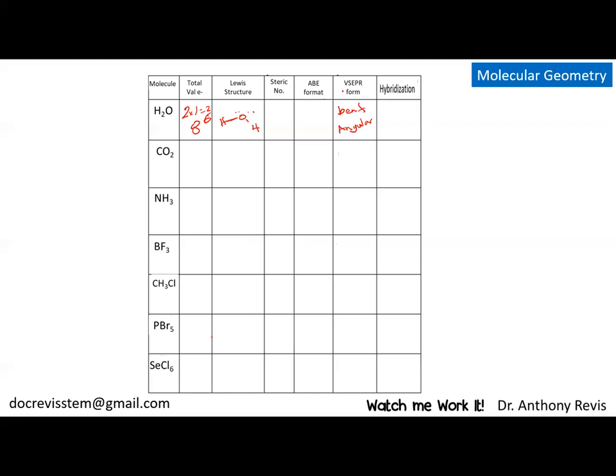And then we have what's called the ABE domain format name here. And we name this by saying the central atom is basically A. And then we look to see what we have around it based on the Lewis structure, and we have two atoms around it, so that's going to be your B, two around it. And we have two sets of lone pairs, so E is going to be electrons, your lone pairs. You have two sets of lone pair electrons.